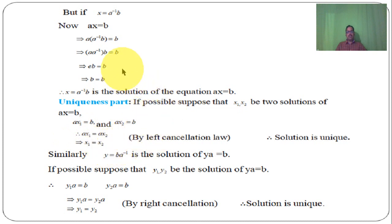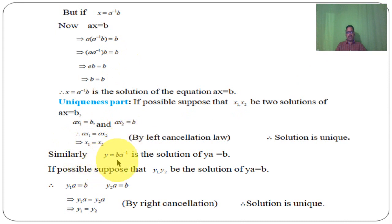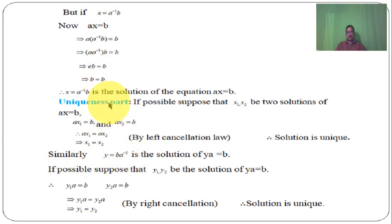Similarly, for the second equation YA equal to B, we can prove in the same way. Y equal to B into A inverse is the solution of YA equal to B. We have to show this solution is also unique.